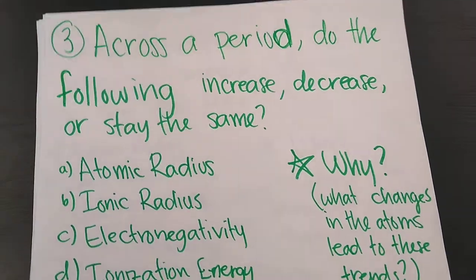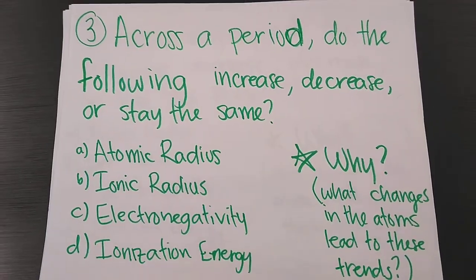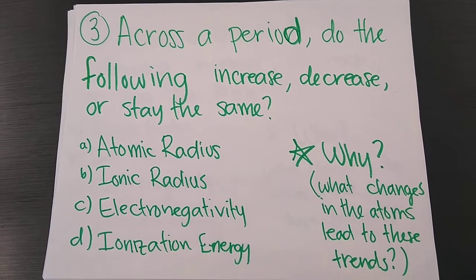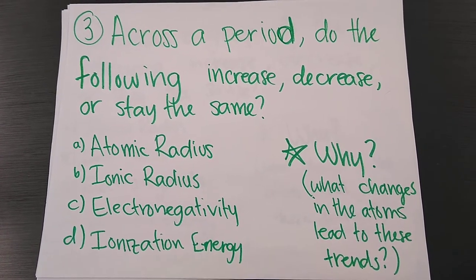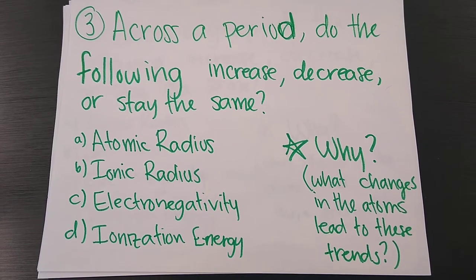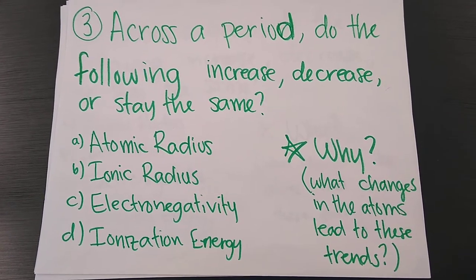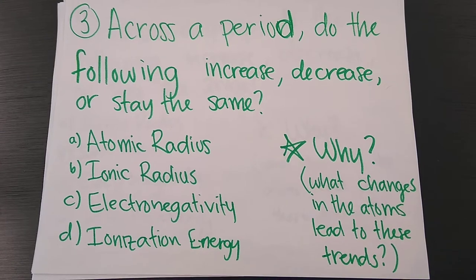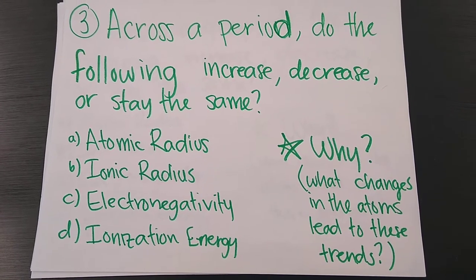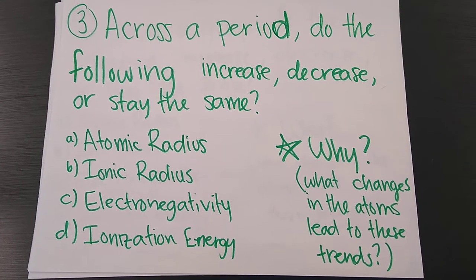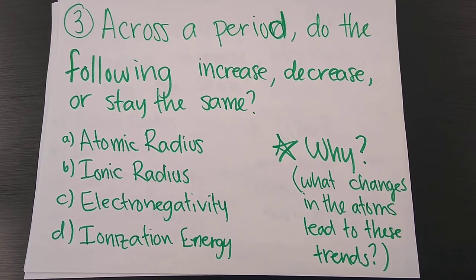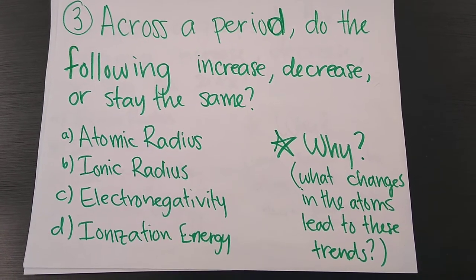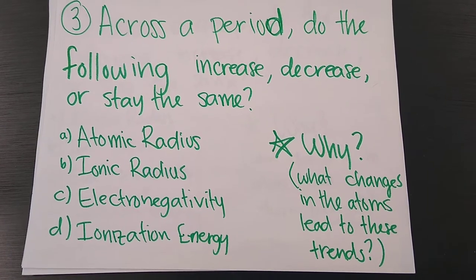Number three, across a period, so moving left to right across a period, do the following increase, decrease, or stay the same? Atomic radius, ionic radius, electronegativity, ionization energy. Why? What changes in the atoms lead to these trends? So you definitely need to understand what's happening to the atoms that is changing the trends as you go across a period.